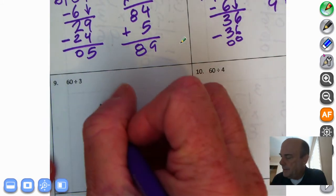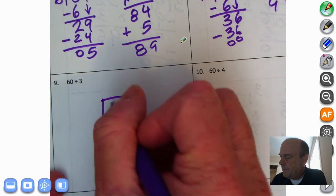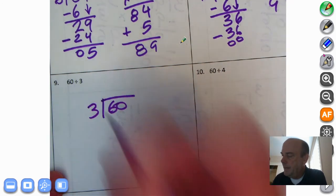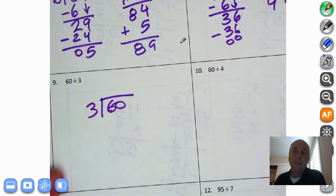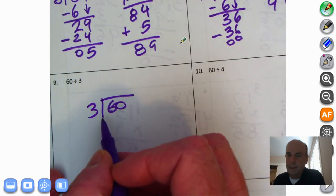I would like you to try this one on your own. If you haven't been doing so already, 60 divided by 3. Go for it. And welcome back.